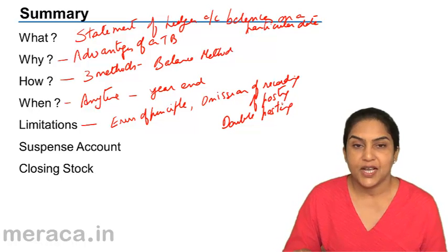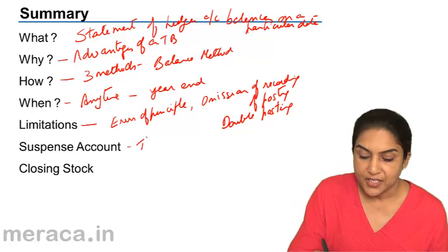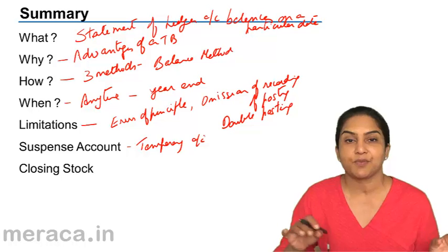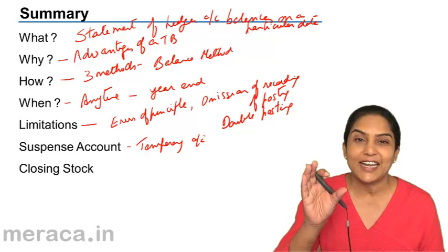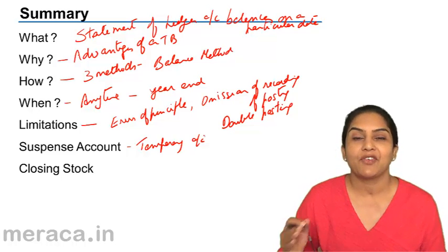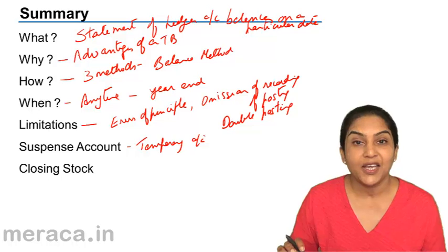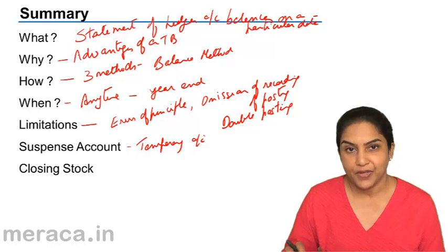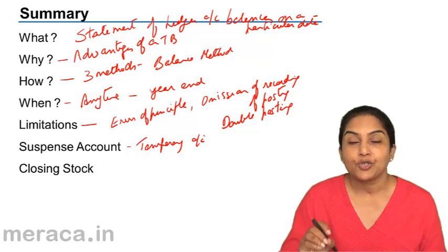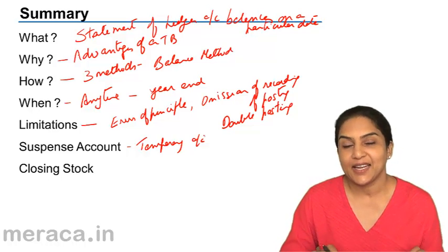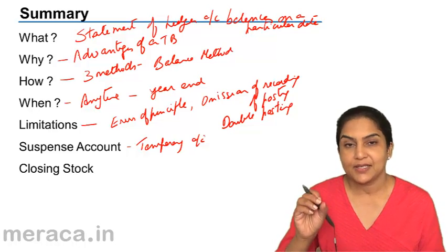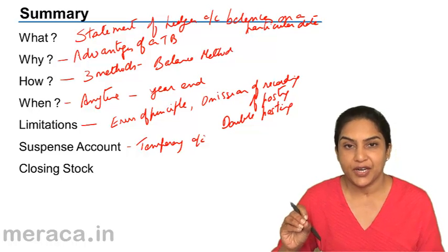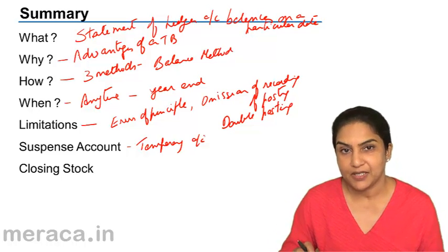We also discussed: what is a suspense account? A suspense account is a temporary account. We cannot say that the suspense account will always have a debit balance or a credit balance. It will have a debit balance when the debit side of the trial balance is short, and it will have a credit balance when the credit side is short. It is a temporary account prepared to temporarily tally the trial balance, and it may have a debit or credit balance depending on which side of the trial balance is short.